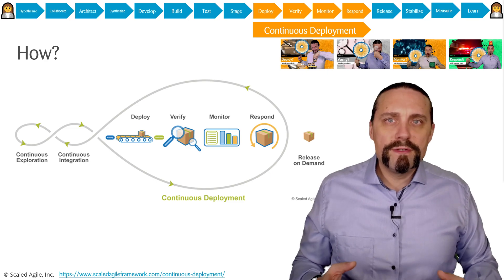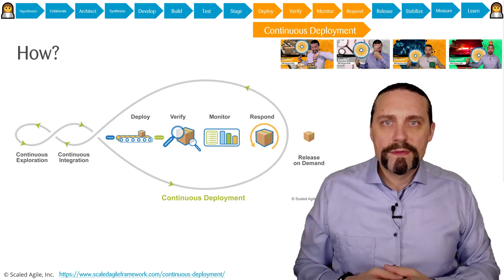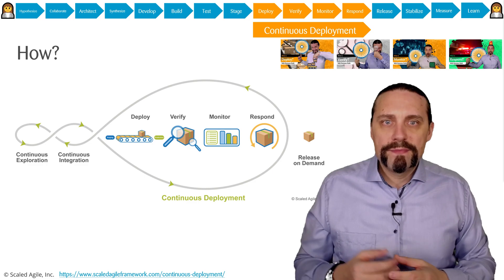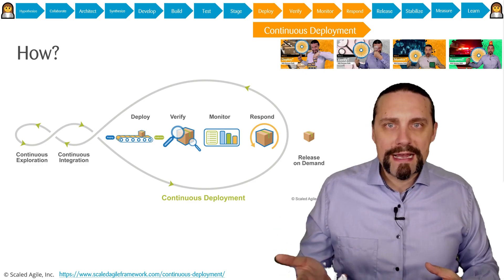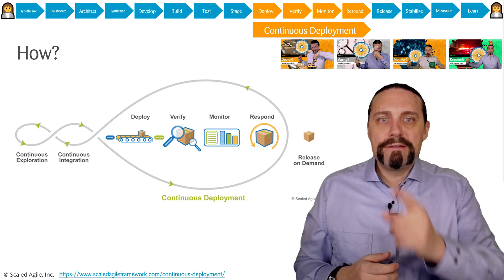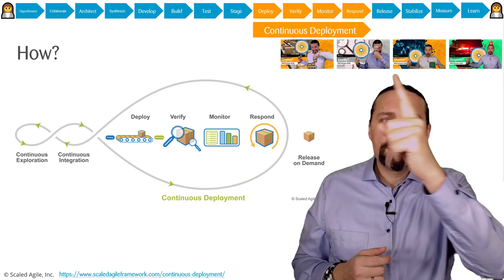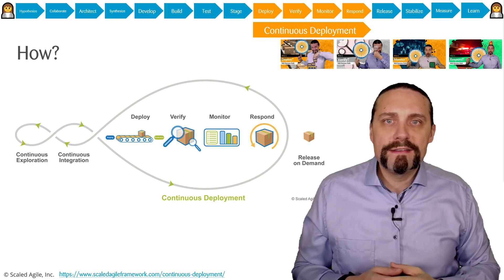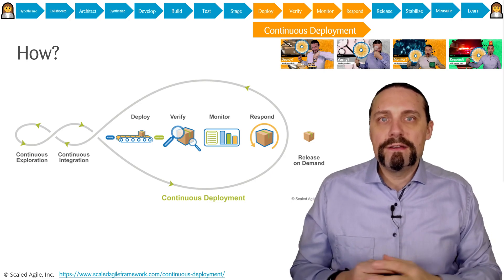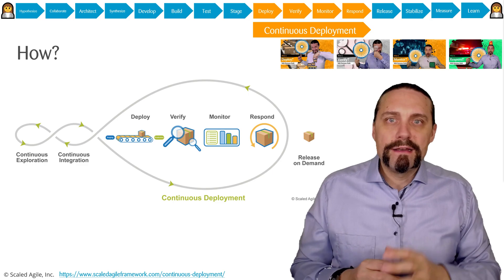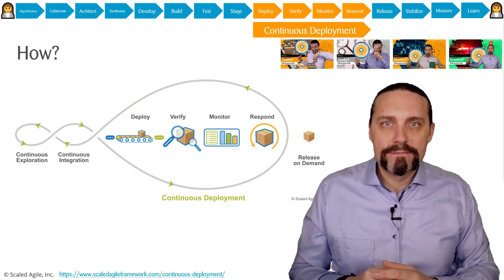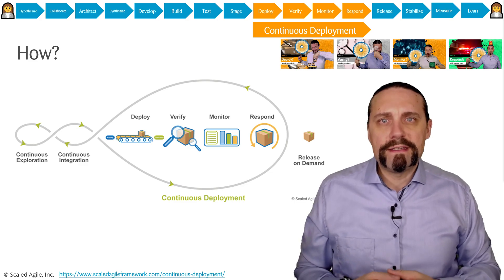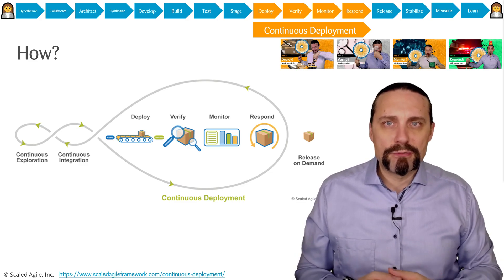So how do we do continuous deployment? We have four activities: deploy, verify, monitor, and respond. I have created an in-depth video for each one of these activities showing exactly what we are doing. The first activity in continuous deployment is the deployment into production.